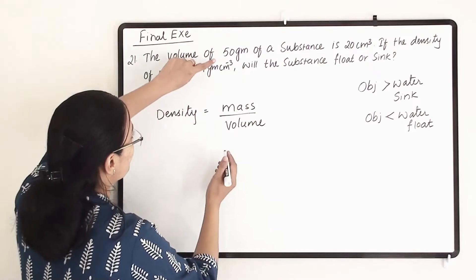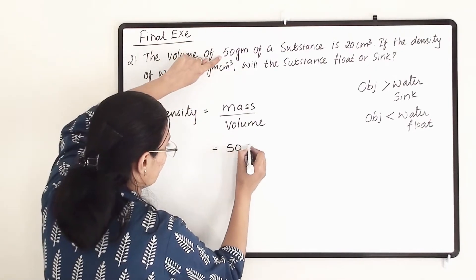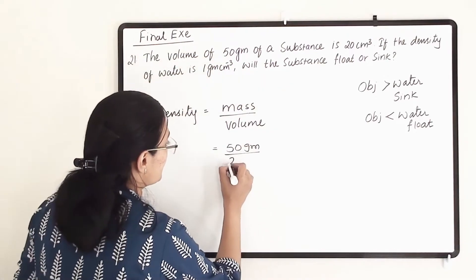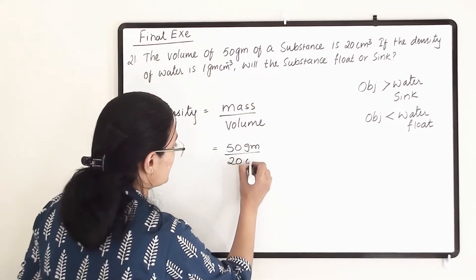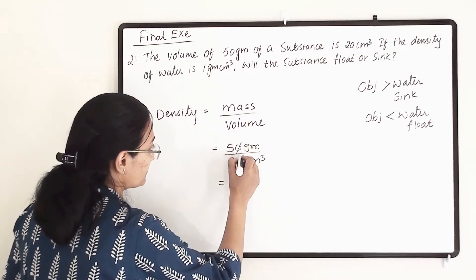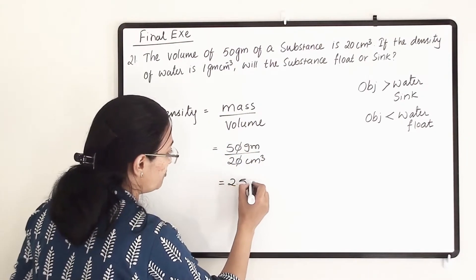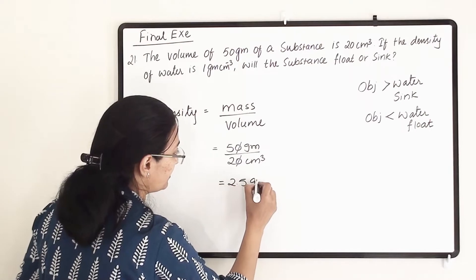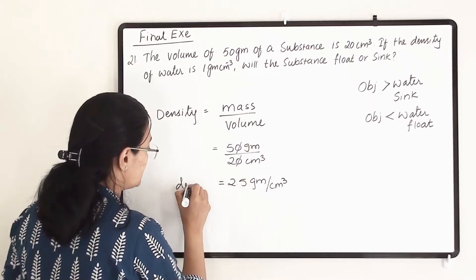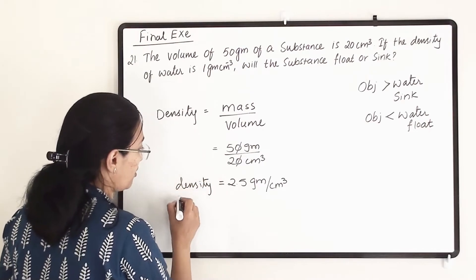The mass is 50 grams and the volume is 20 centimeter cube. So we get 50 divided by 20, which simplifies to 5 divided by 2, giving us 2.5 grams per centimeter cube. This is the density of the substance.